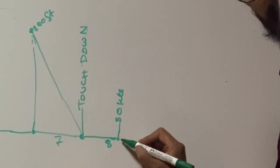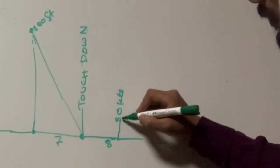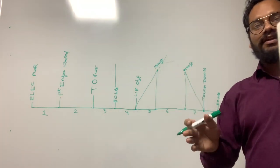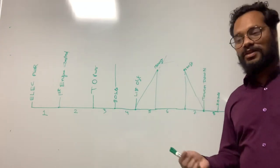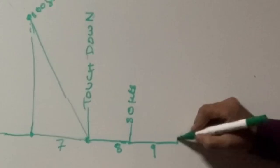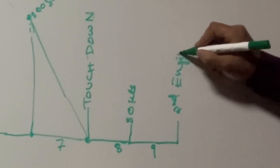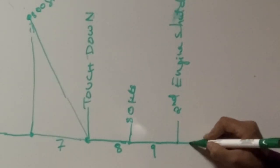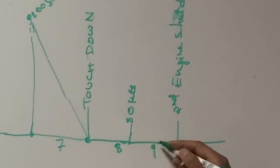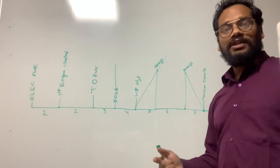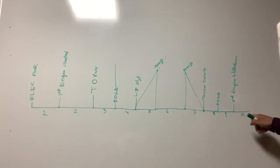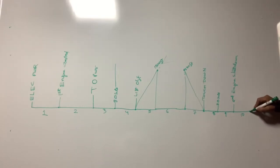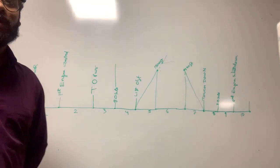After phase 8 ends, phase 9 will start when your speed is below 80 knots. In phase 9, you will decelerate, stop the aircraft, do taxiing, come back to the bay, and then shut down the engines. When you do the second engine shutdown, phase 10 will start. Again you are on the ground and you can electrically power the aircraft.